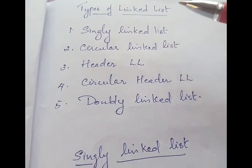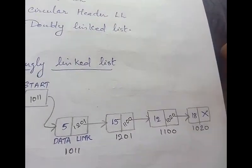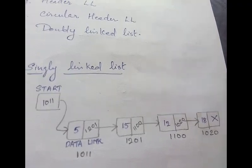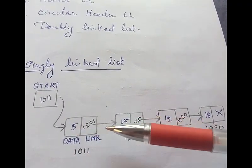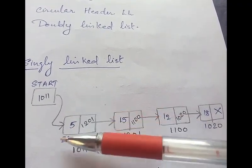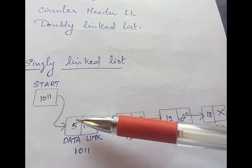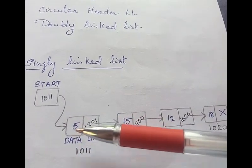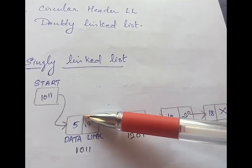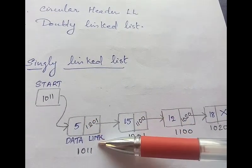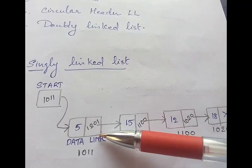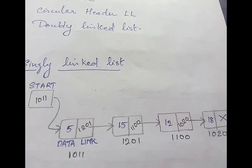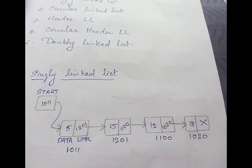The first one is the singly linked list. A singly linked list is a list of nodes where each node is partitioned into two parts: a data part and a link part. The data part holds the value of the node — the element to be stored — and the link part or next part holds the address of the next node in the linked list. This is an example of a singly linked list.